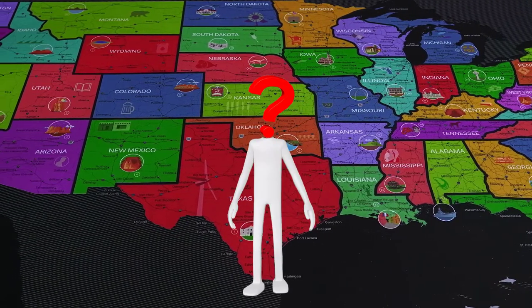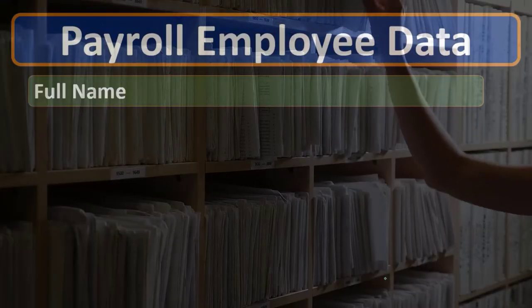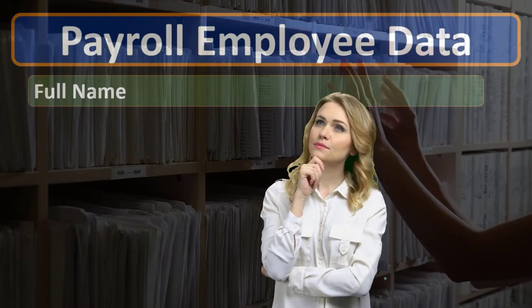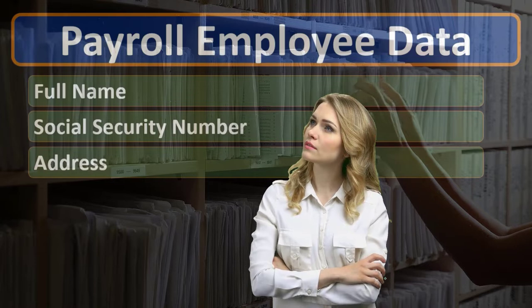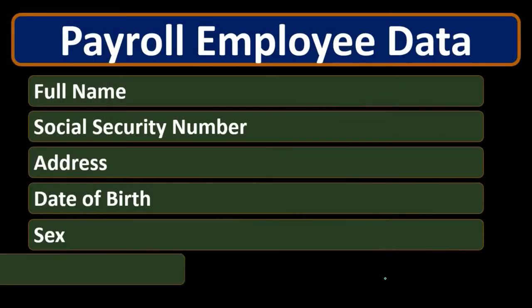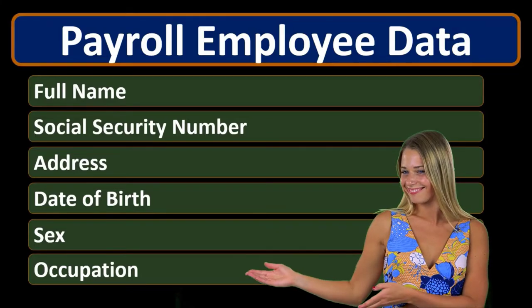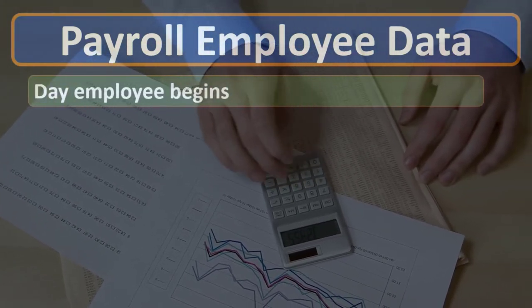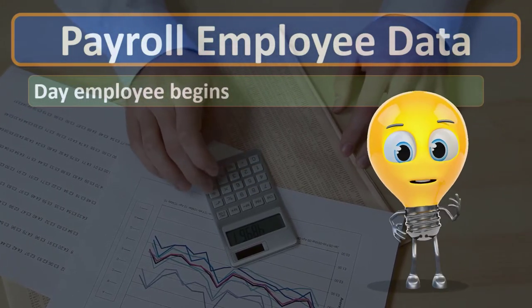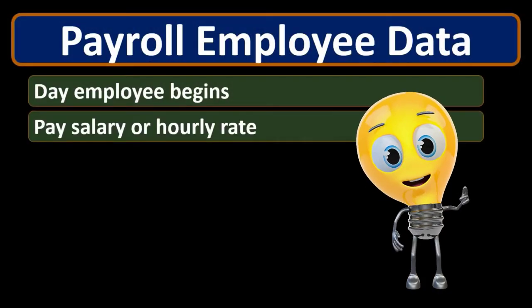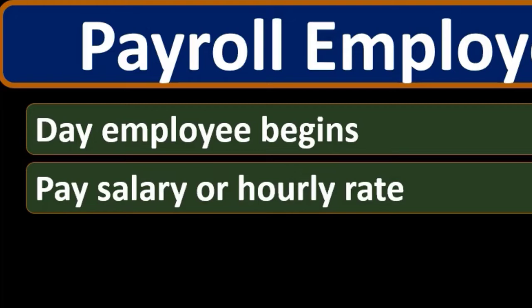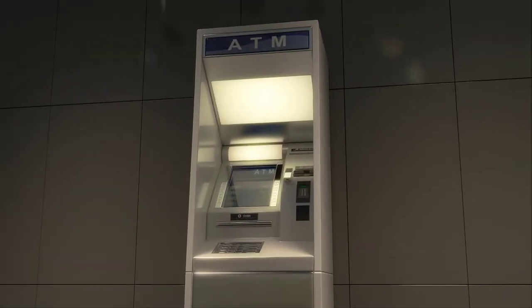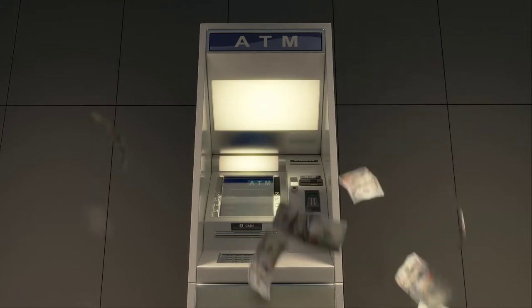The type of data we need on file for employees — especially new employees — includes full name, social security number, full address, date of birth, sex, and occupation. We also want to note the day the employee begins, as that first paycheck is a bit more complicated because we often have a partial period when recording it. We may set up the pay schedule so the new employee starts at the beginning of a pay period to make things easier.